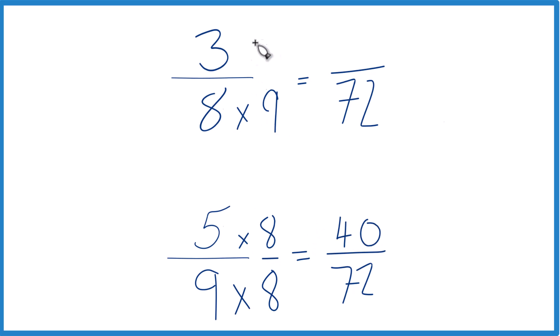Up here, I need to multiply by 9. So 3 times 9, that's 27.